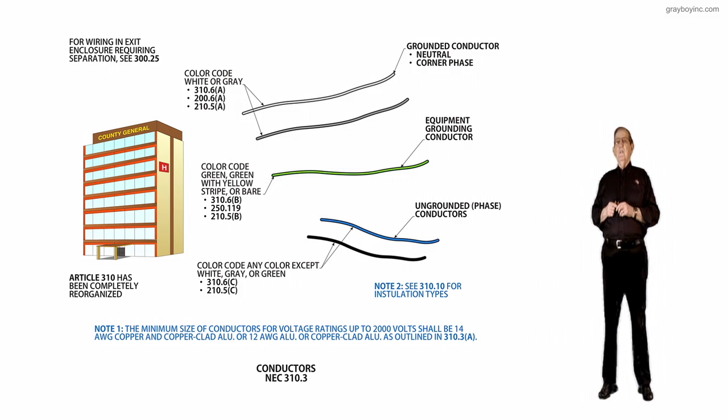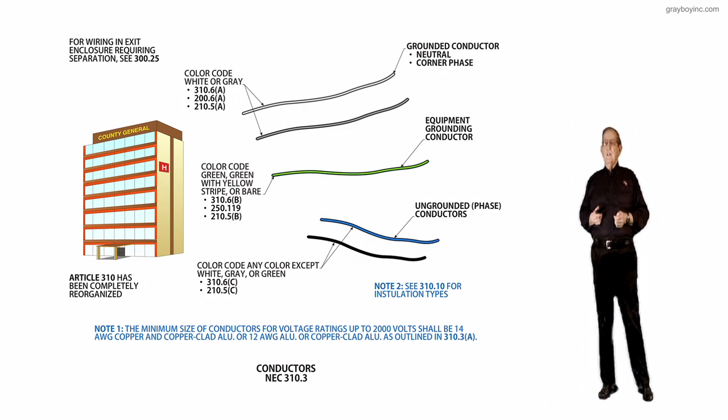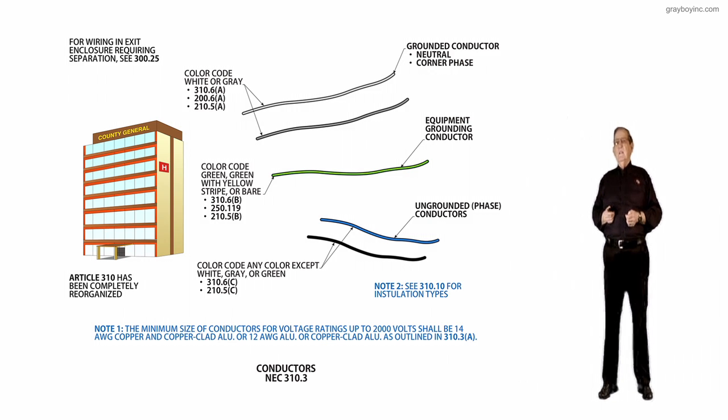And if you look at 310.10C, it will refer you over to 210.5C for branch circuits, but it would send you for feeders to 215.12C to determine what color you could use on those ungrounded conductors.